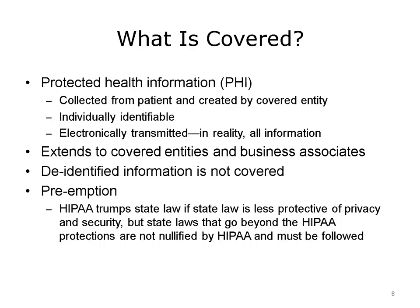What is covered by the HIPAA privacy regulations? The privacy regulations cover Protected Health Information, or PHI. This is information that is collected from the patient and created by a covered entity, such as a health care provider, clearinghouse, or health plan. It's individually identifiable and electronically transmitted information. HIPAA regulations extend to covered entities and business associates of the covered entities. De-identified information is not covered. There are various levels of preemption: HIPAA trumps state law if state law is less protective of privacy and security, but state laws that go beyond the HIPAA protections are not nullified by HIPAA and must be allowed.